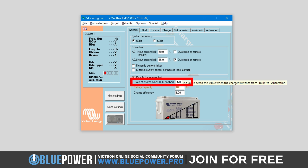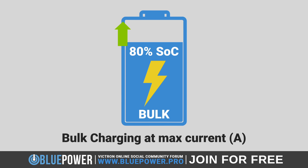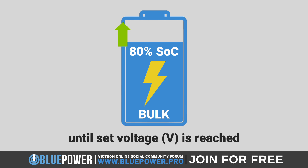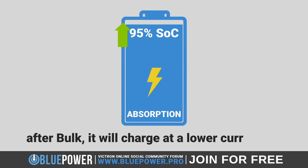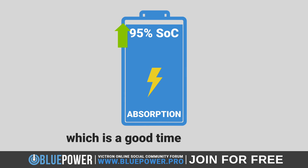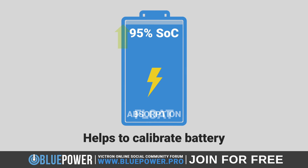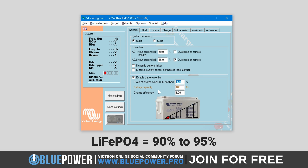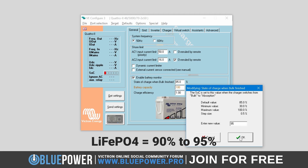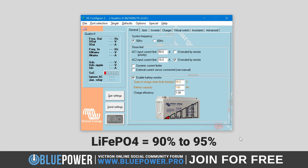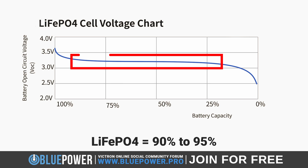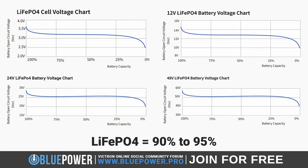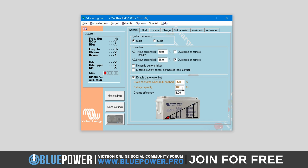The 'state of charge when bulk finished' setting specifies at what SOC percentage the bulk phase must finish. During bulk phase, the battery is charged at maximum current until it reaches a predetermined voltage. This setting helps calibrate the system, preventing the SOC value from drifting due to measurement errors across successive charge and discharge cycles. For lithium iron phosphate batteries, this should typically reflect the point at which the battery is nearly fully charged without being overcharged. Since LiFePO4 batteries have a flat voltage curve and are considered nearly full at around 90–95% SOC, setting this to 95% is accurate.